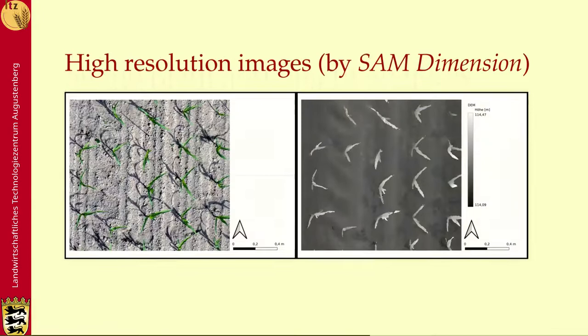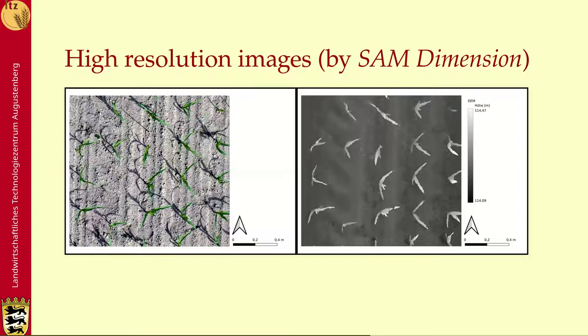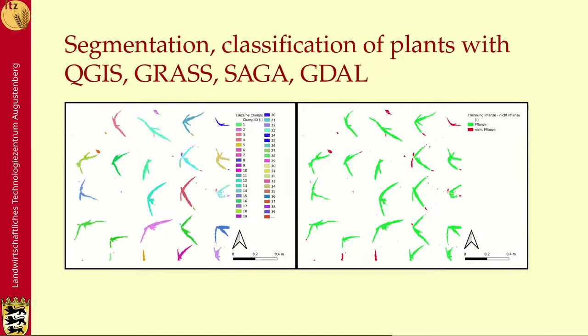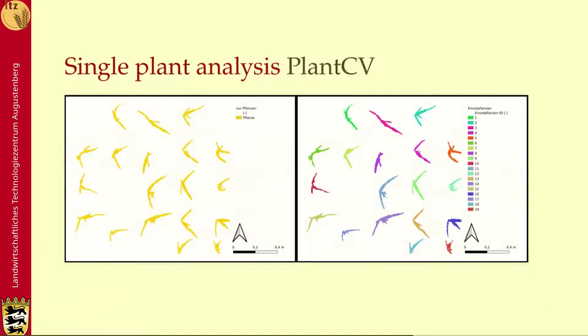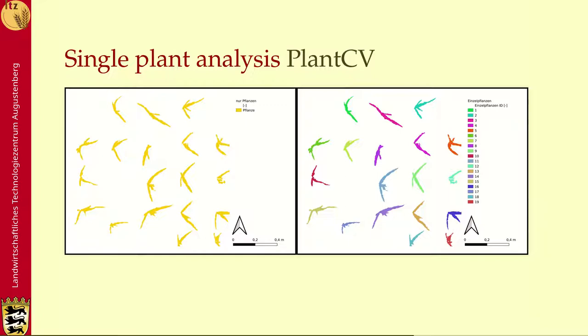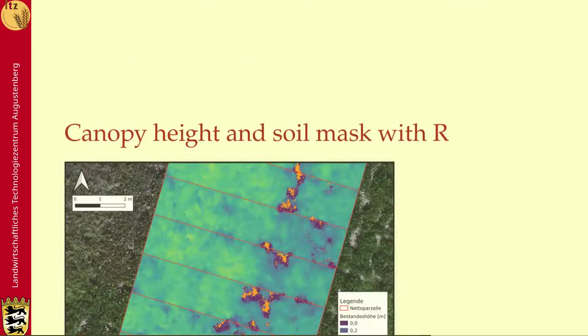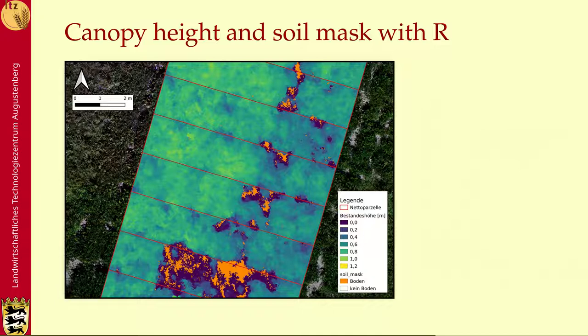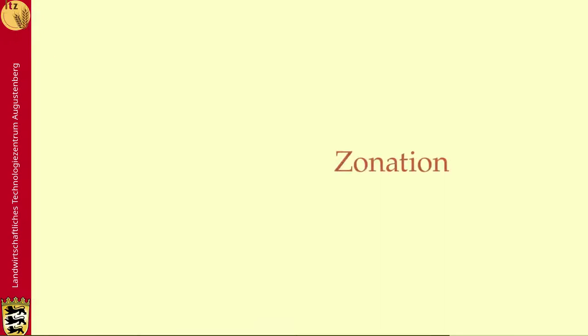For single plant and height analyses, if you have very high resolution images like on the left and also high resolution height models like on the right, where you can see each plant, then you can do segmentation and classification directly with GIS software. We used free GIS software to create some classification and segmentation. If you want to go further into detail, you can do the analysis with PlantCV, which is based on OpenCV and Python — all free software. Canopy height and soil masks were also created here with R, which is the free statistics package.